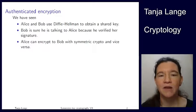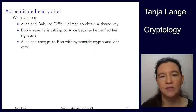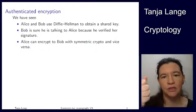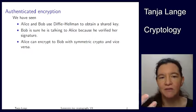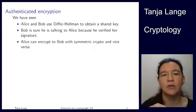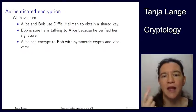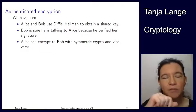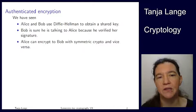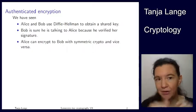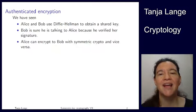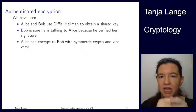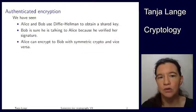We have also seen signatures. With signatures, Bob is sure he is talking to Alice because he has verified her signature. In the Diffie-Hellman context, Alice would send her Diffie-Hellman share, signed by some long-term key that she has, and then Bob verifies that this is really from Alice — similarly on Alice's side with Bob. Then they compute the Diffie-Hellman shared key knowing they are talking to the right person.